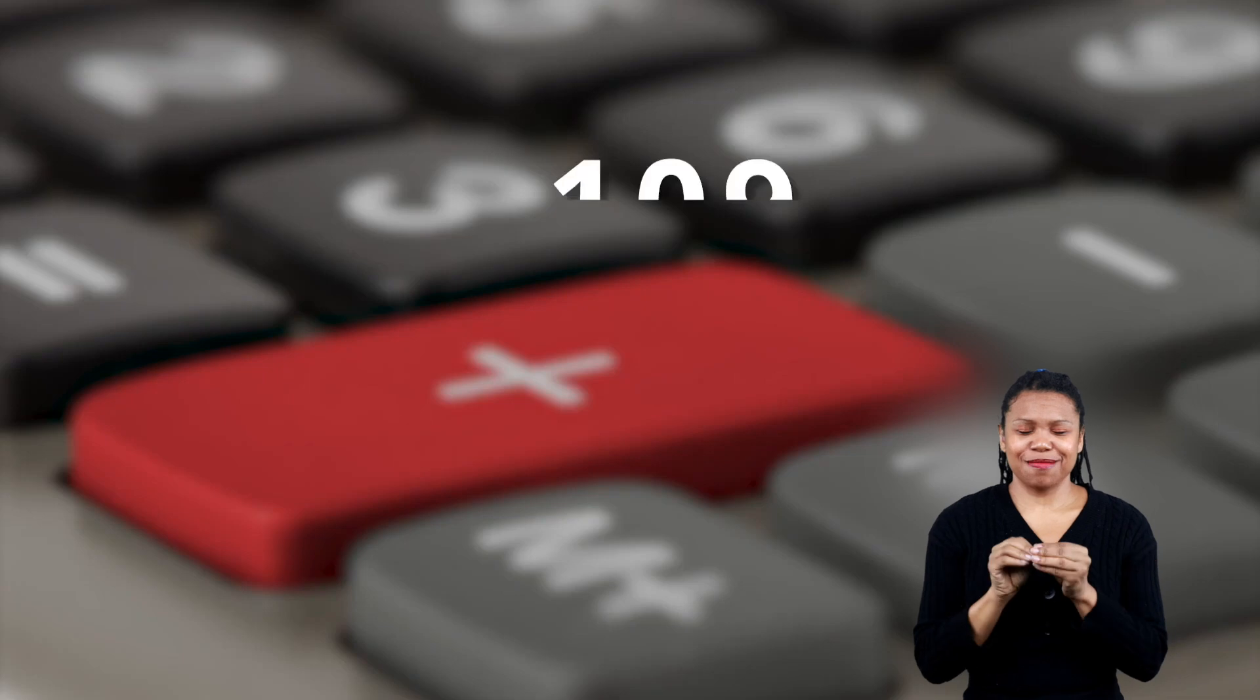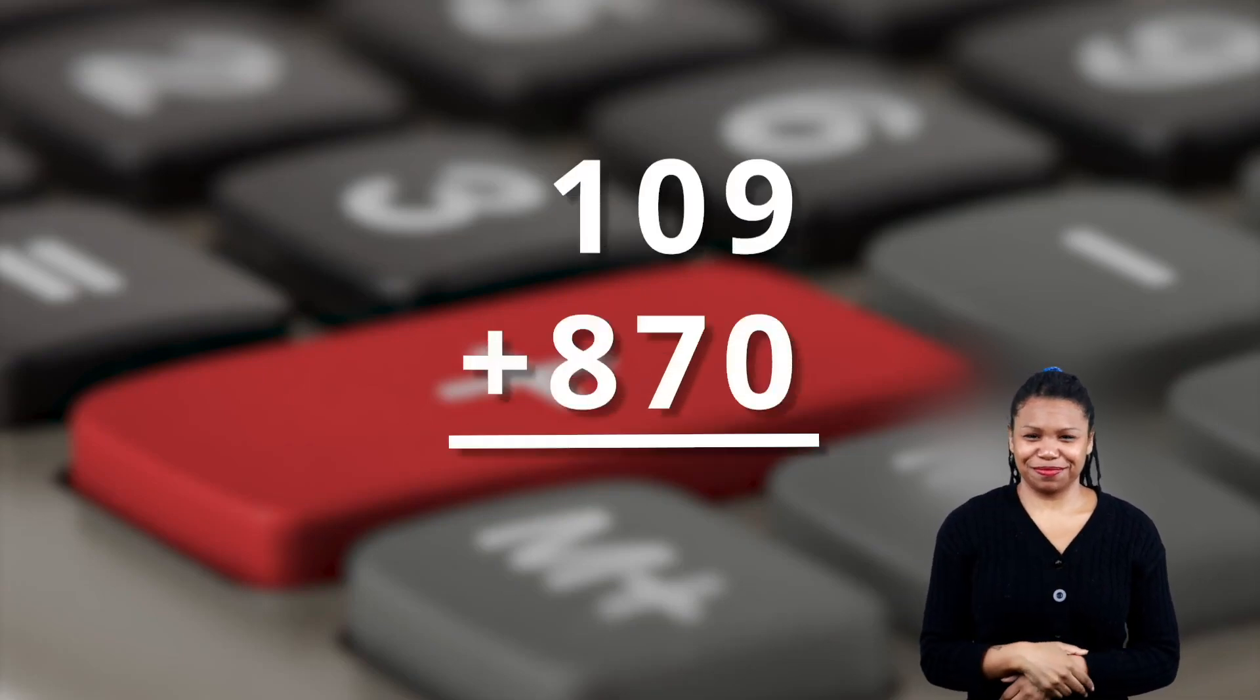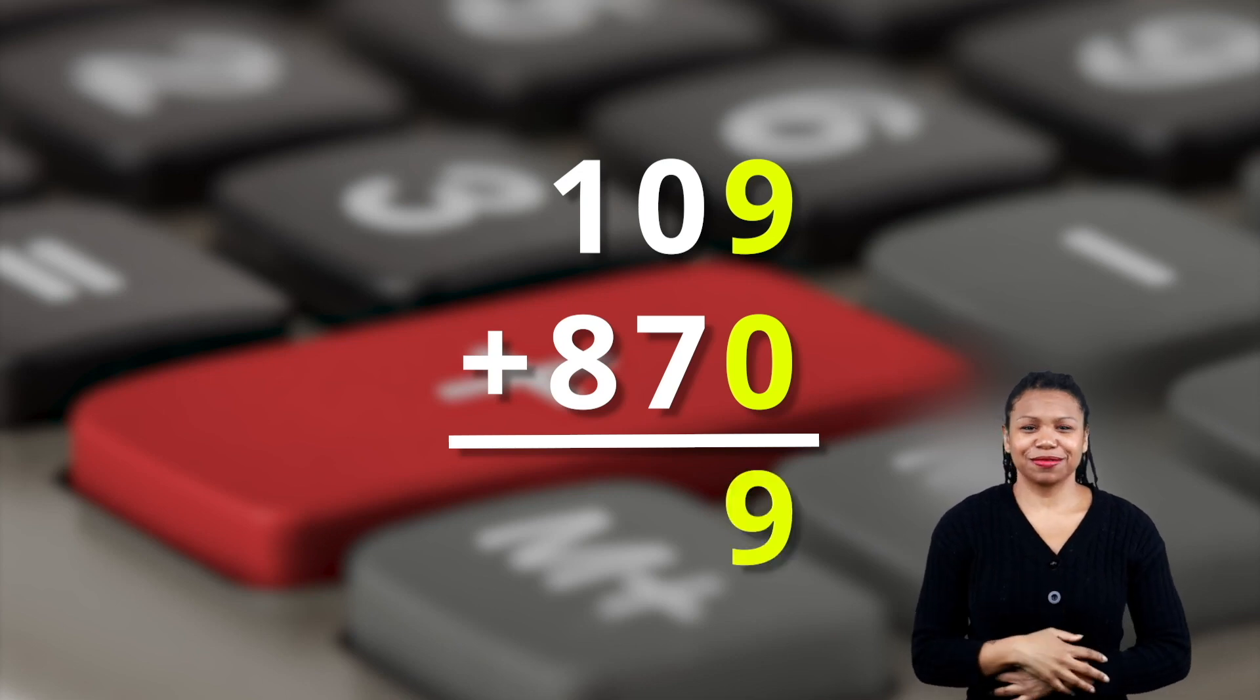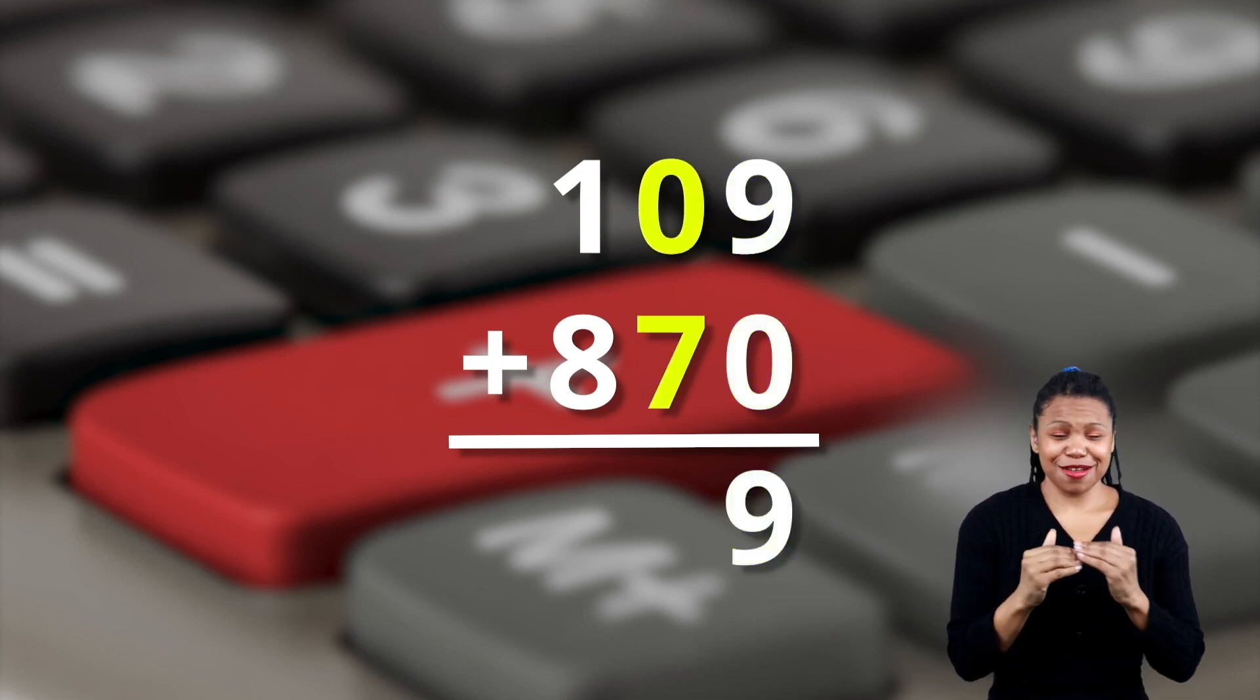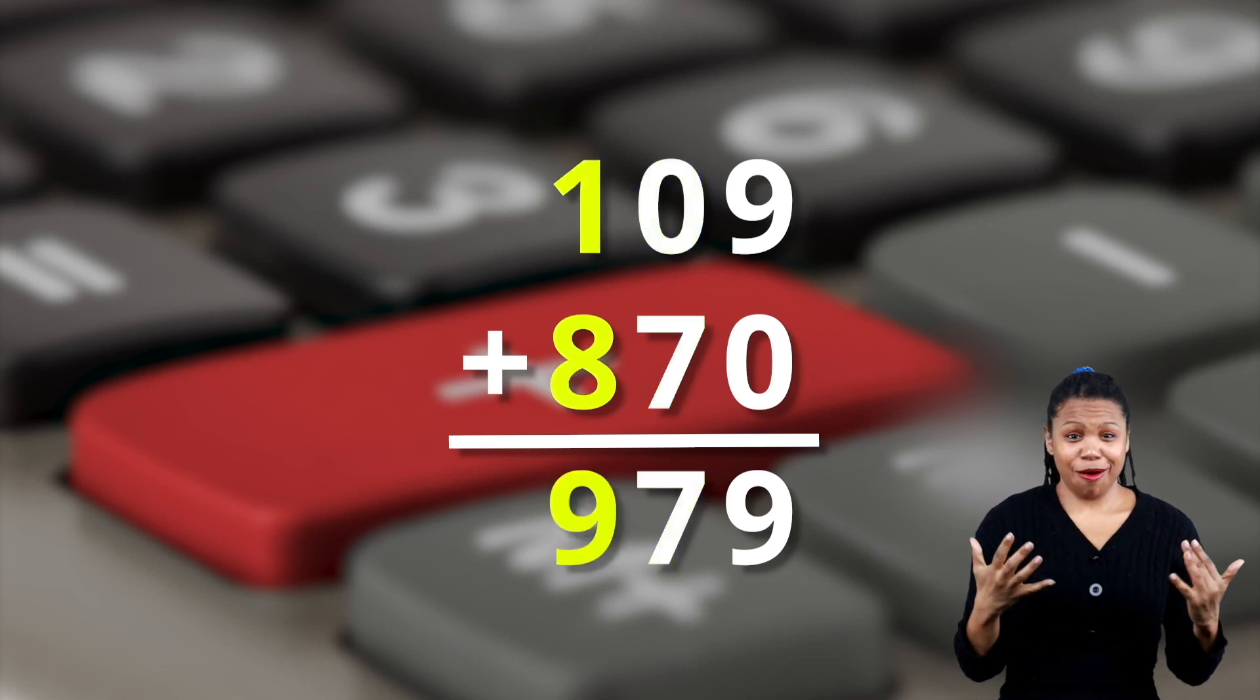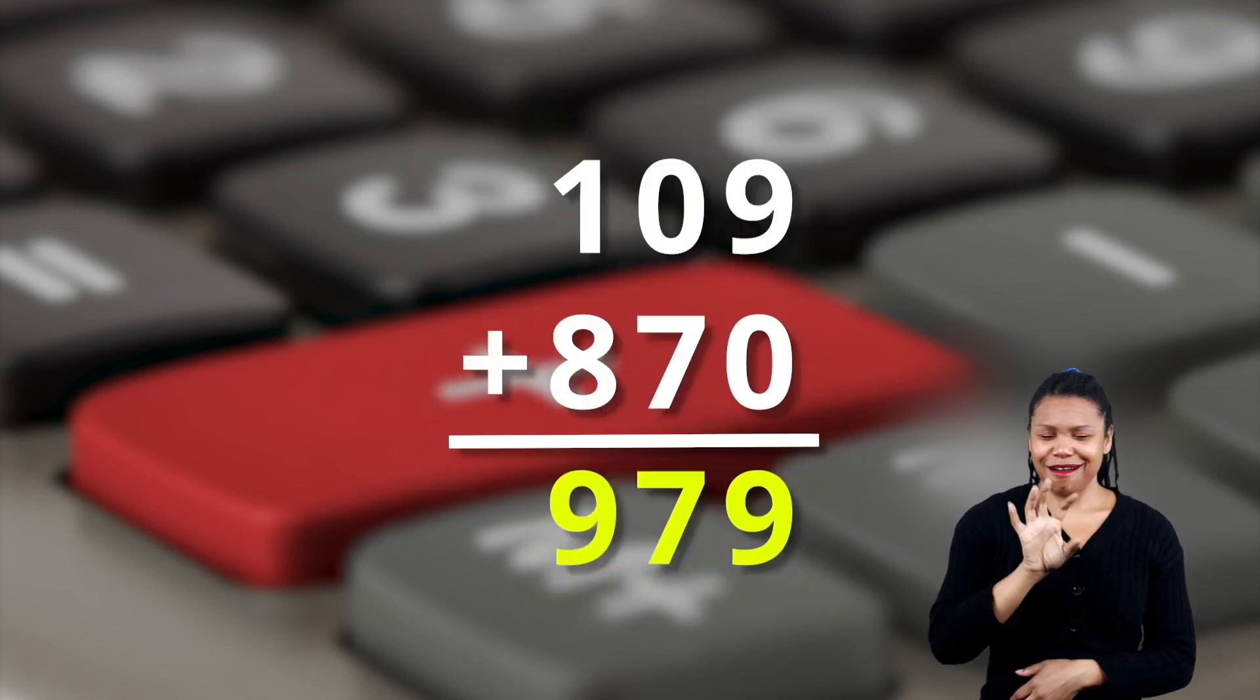Here's a little bit of a tougher one. A hundred and nine plus eight hundred and seventy. So you have the nine plus zero, which gives you nine. Zero plus seven, which gives you seven. And one plus eight, which gives you nine. Nine hundred seventy-nine. Well done!